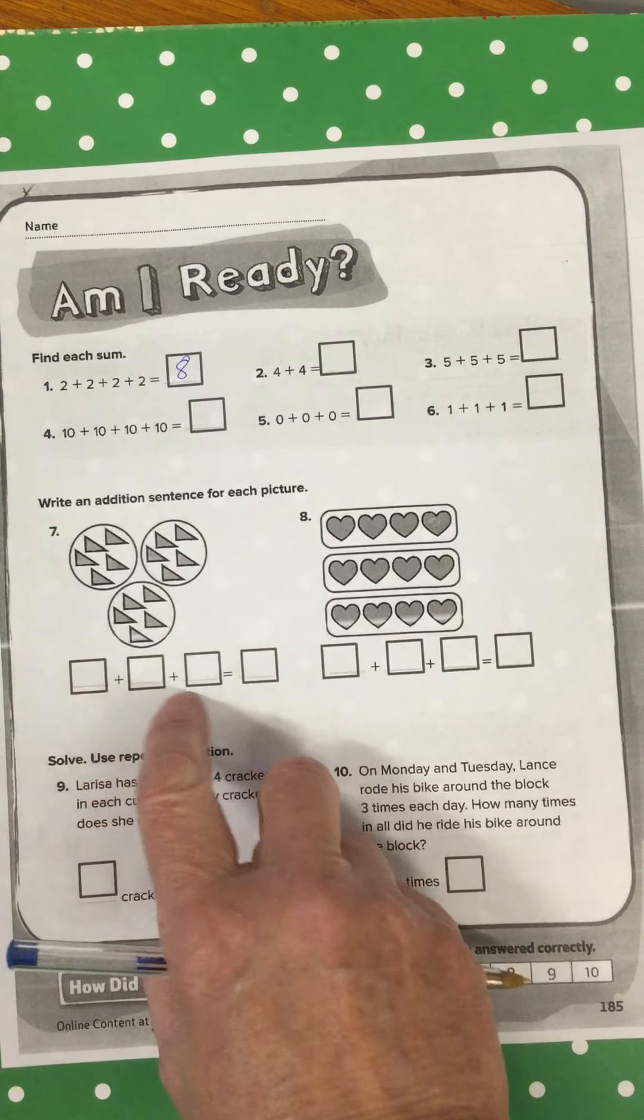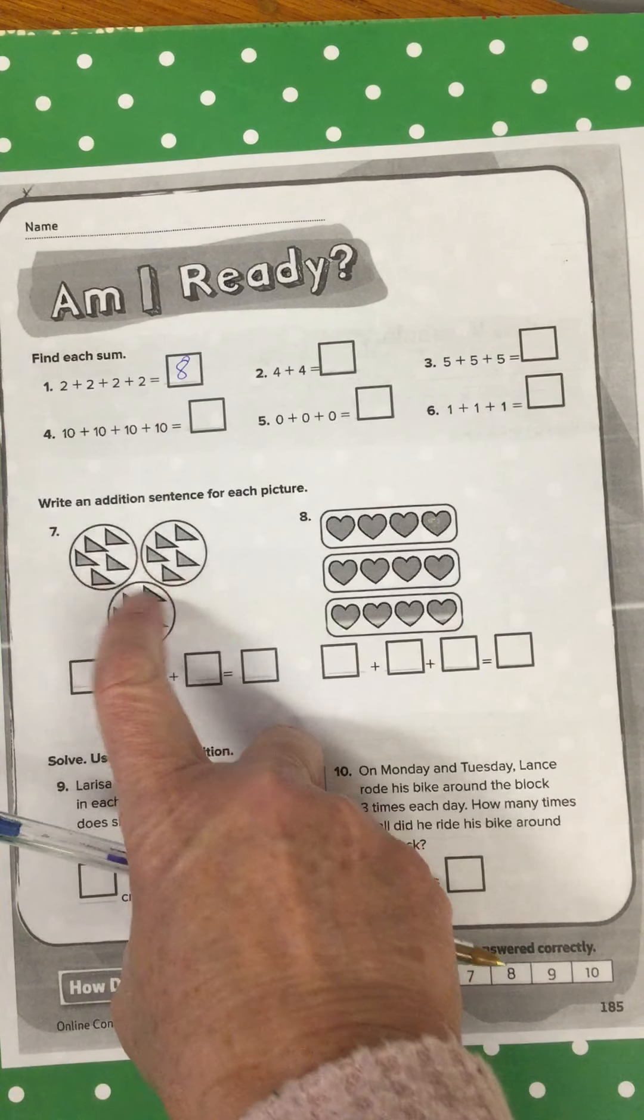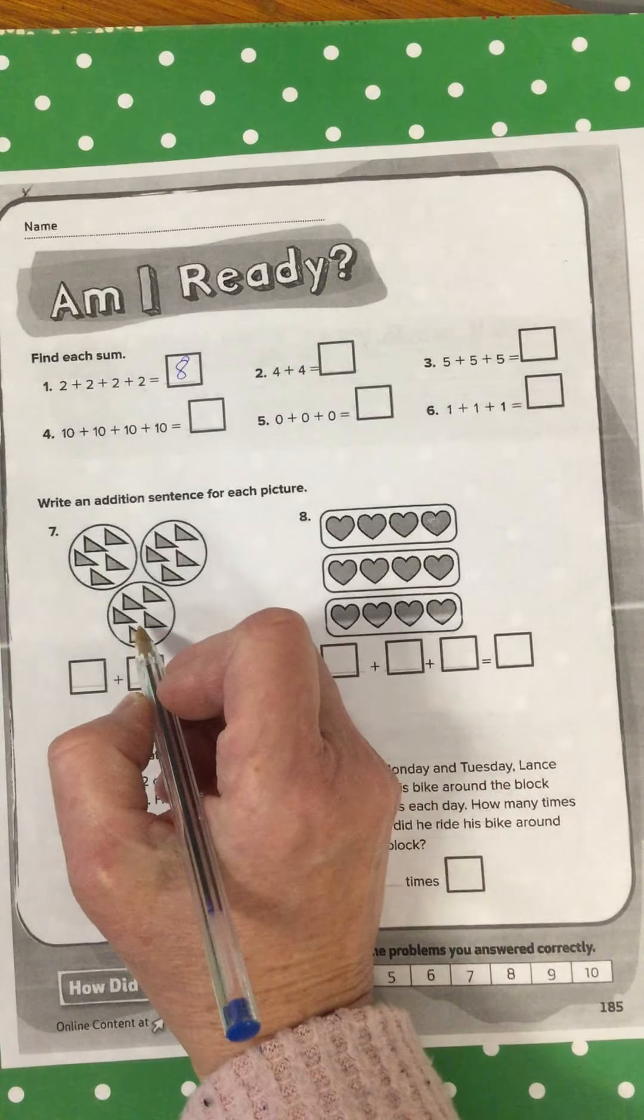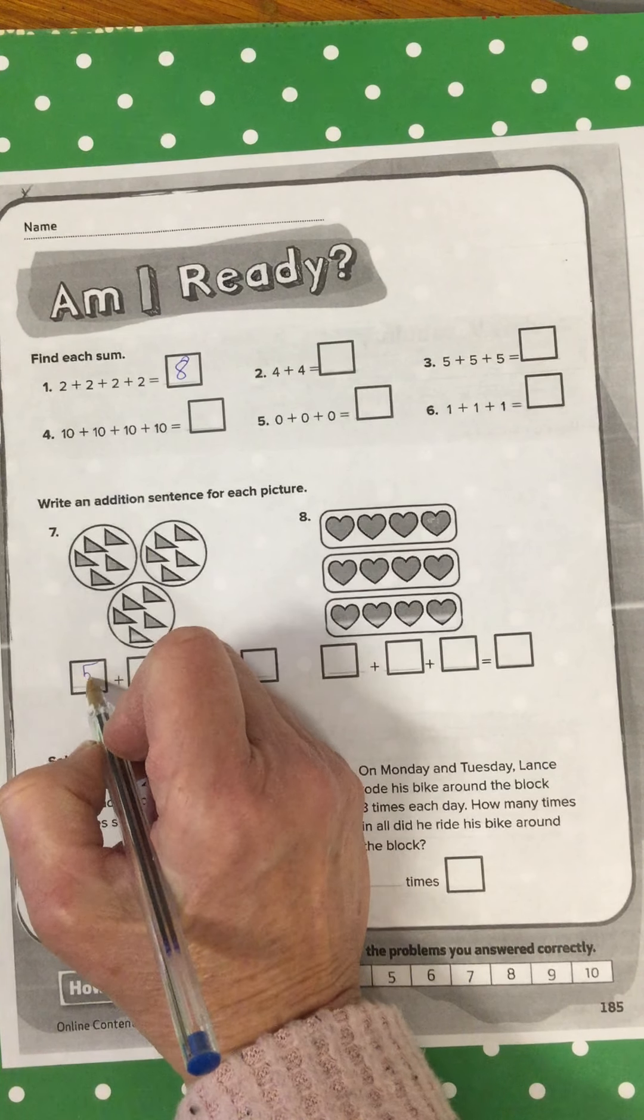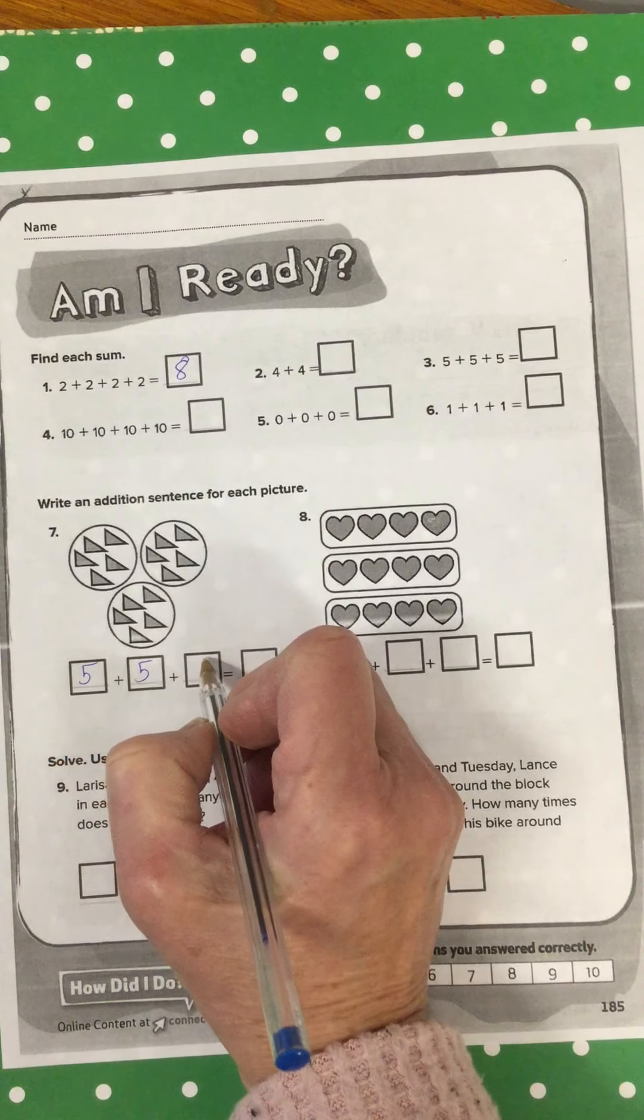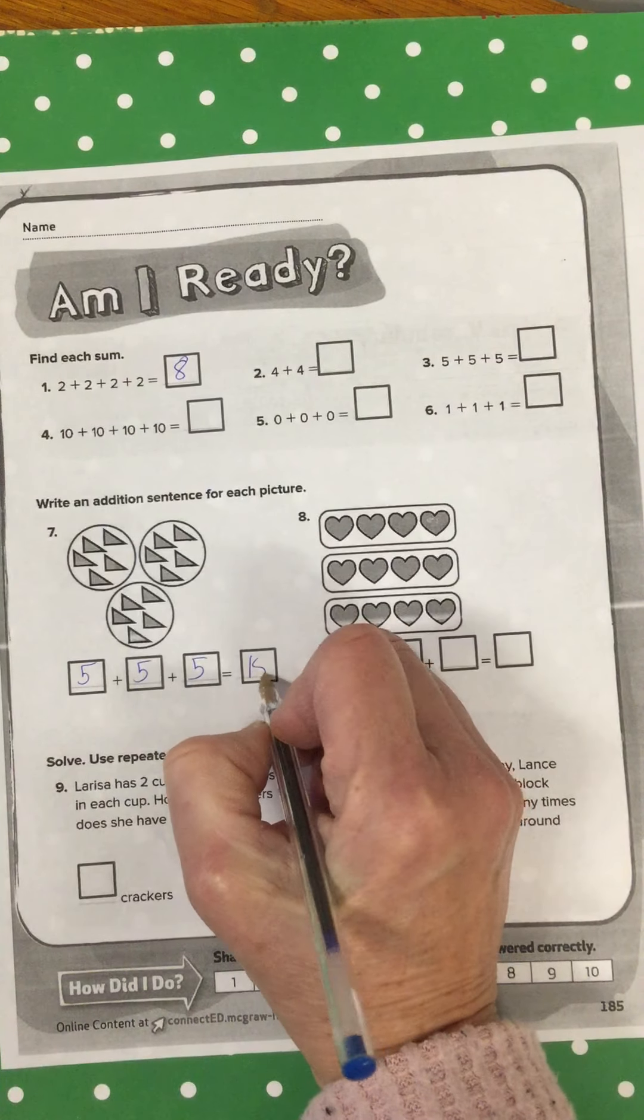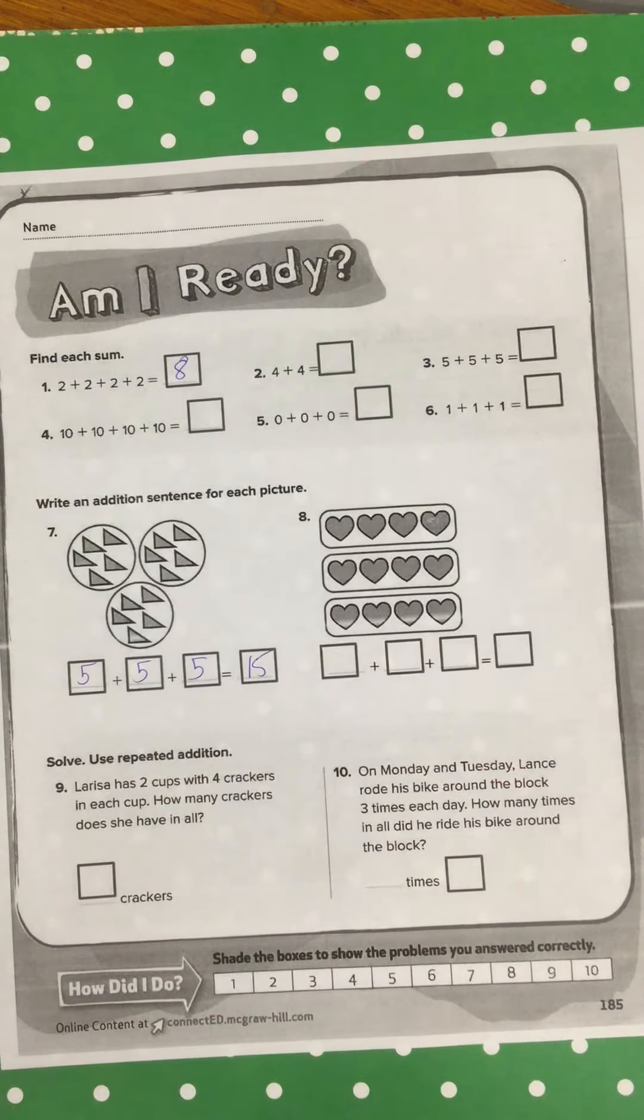And I got 3 boxes here. So those represent the 3 equal groups that I have. So how many are in each group? 5. So 5 plus 5 plus 5 equals 15. And that's kind of how this first sheet will go. Am I ready?